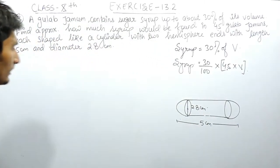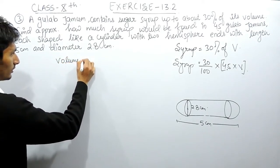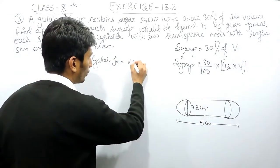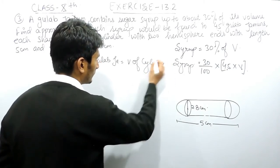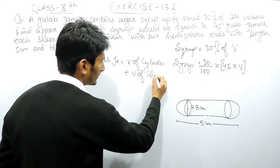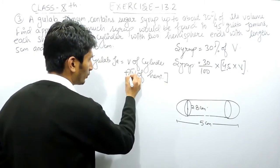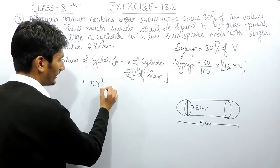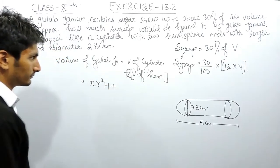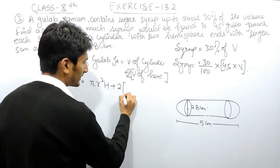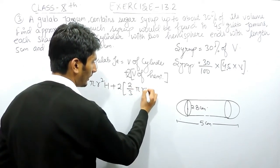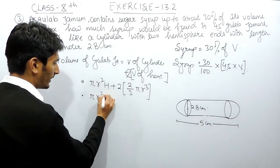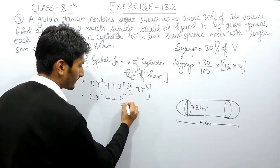The volume of the gulab jamun equals the volume of the cylinder plus the volume of 2 hemispheres. The volume of the cylinder is πr²h, and the volume of 2 hemispheres is 2 multiplied by (2/3)πr³, which simplifies to (4/3)πr³. So the total volume is πr²h + (4/3)πr³.